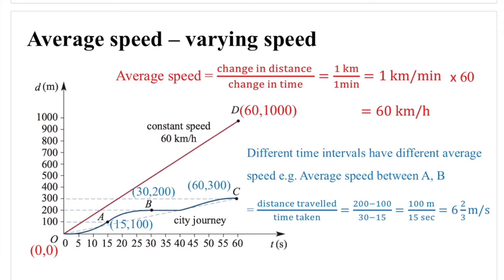In real life your journey will probably look more like a blue curved line instead of a straight line. We know how to find the average speed for a linear function already — using y2 minus y1 over x2 minus x1 gives you the gradient, which is the average speed. But when we have a curved line, different time intervals will have different average speeds. However, we can always find two points and draw a line through them.